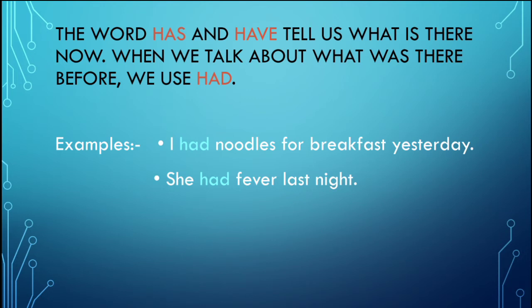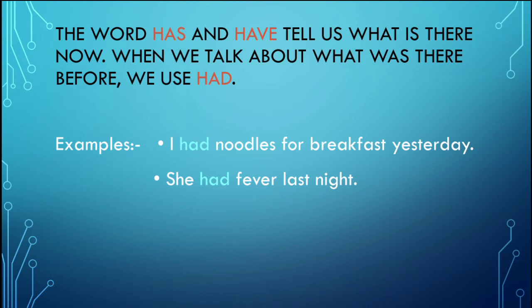The words 'has' and 'have' tell us what is there now — we use them to talk about the present, what is happening right now. But when we talk about what was there before — in the past — we use 'had.' If something has already happened, we use 'had' instead of 'has' or 'have.'